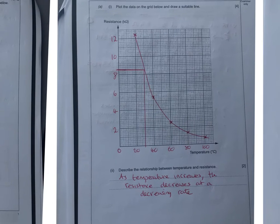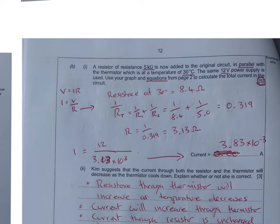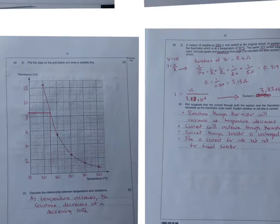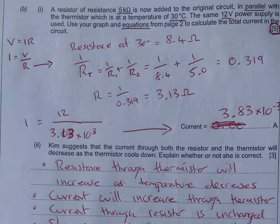Resistor of resistance five kilo ohms is now added to the original circuit. They're going to do this in parallel at 30 degrees Celsius. The same 12 volt power supply is used. The resistance at 30 degrees, you can see I've used my graph here, is about 8.4. You've got a 5 is now added in parallel.